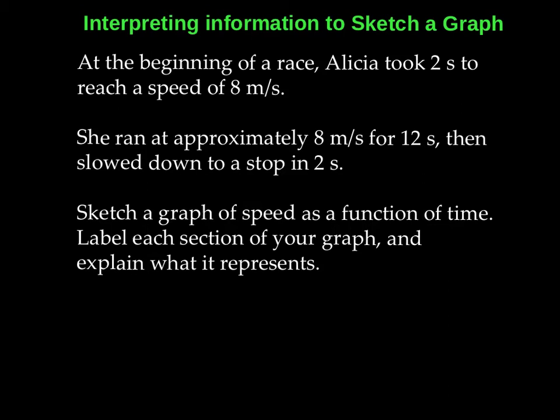Okay, so in this example we have some information, and we need to interpret it in order to sketch a graph. So the story is, Alicia is racing, she's a runner, and so this is her journey. At the beginning of a race, Alicia took 2 seconds to reach a speed of 8 meters per second. She ran at approximately 8 meters per second for 12 seconds, then slowed down to a stop in 2 seconds. Sketch a graph of speed as a function of time.